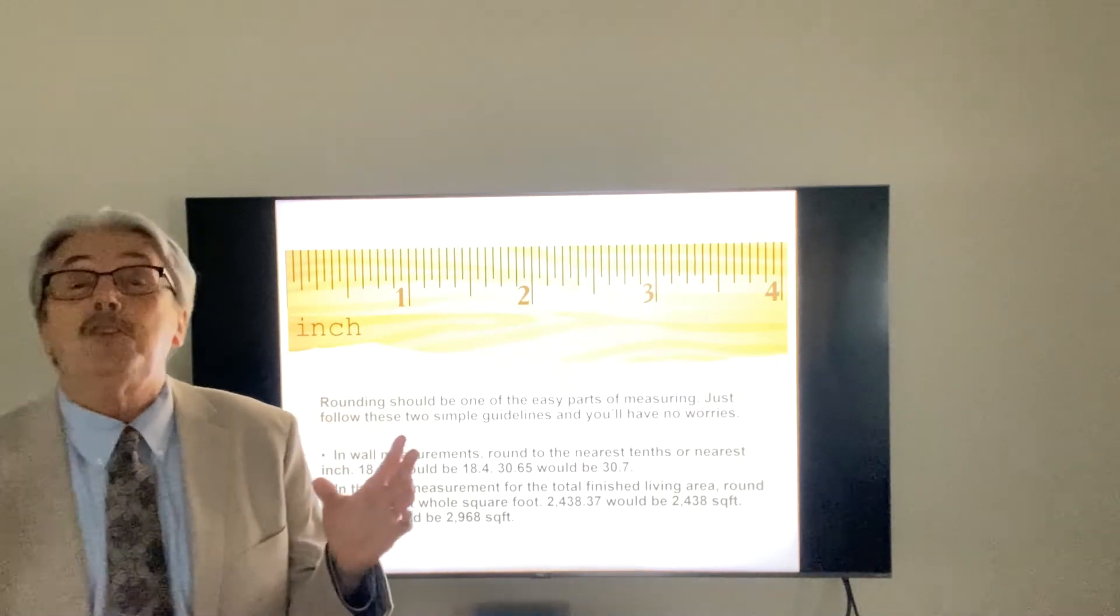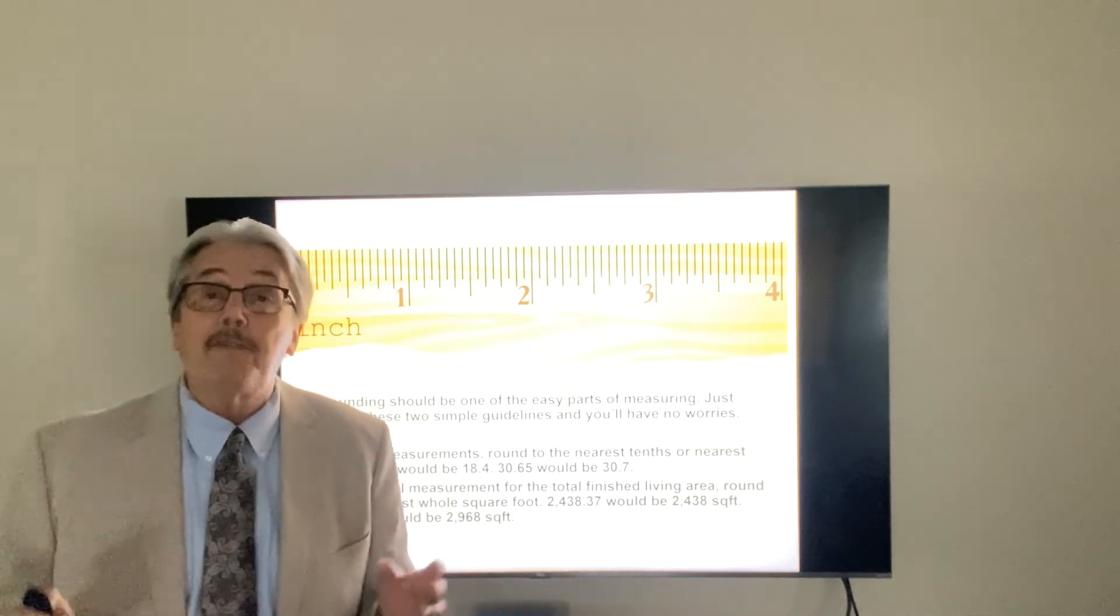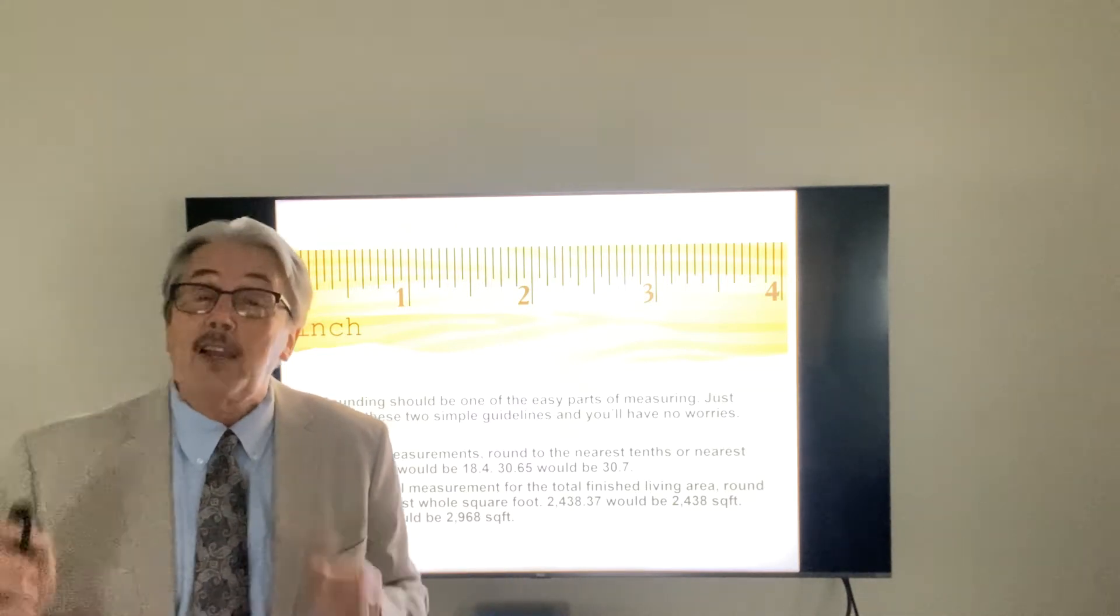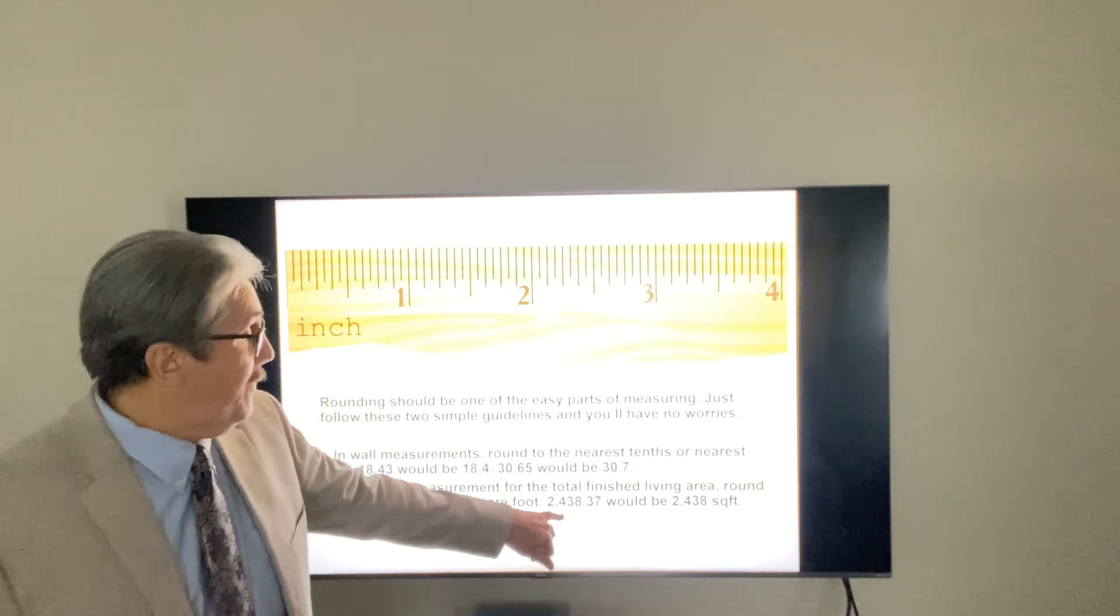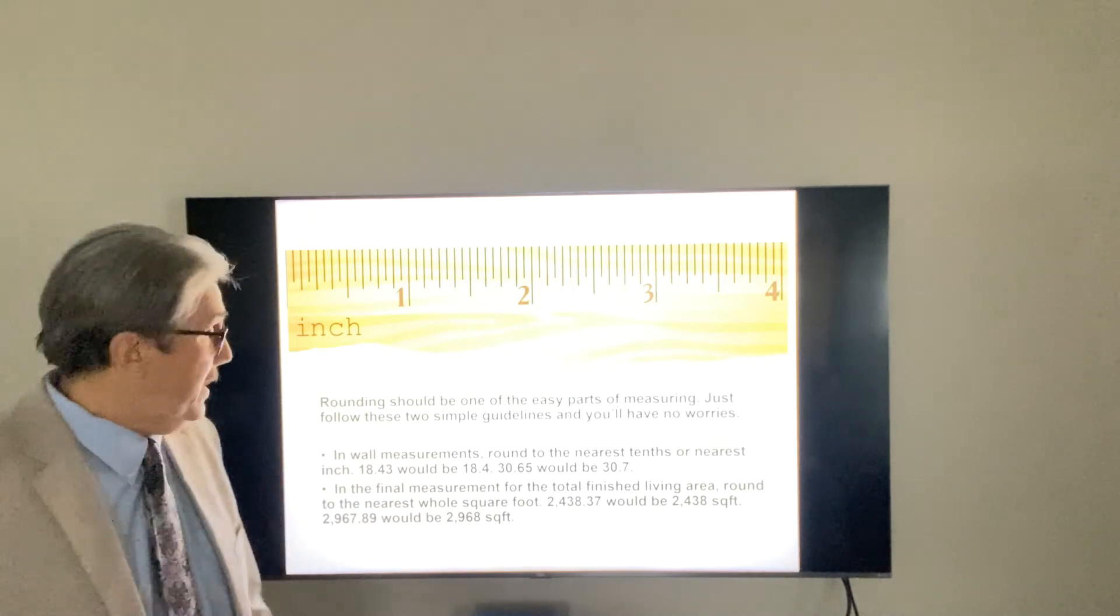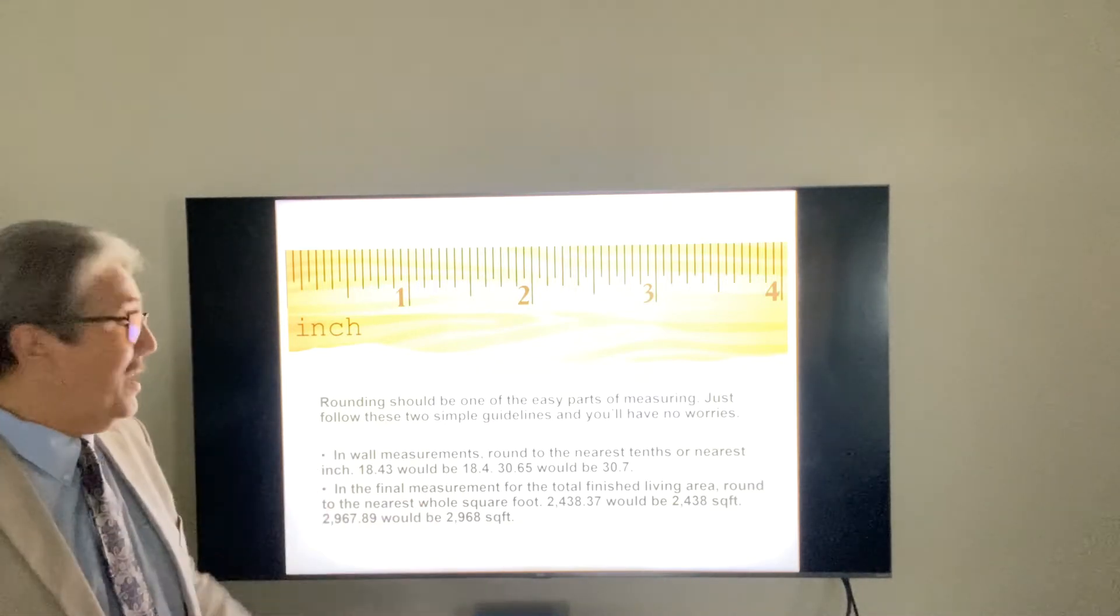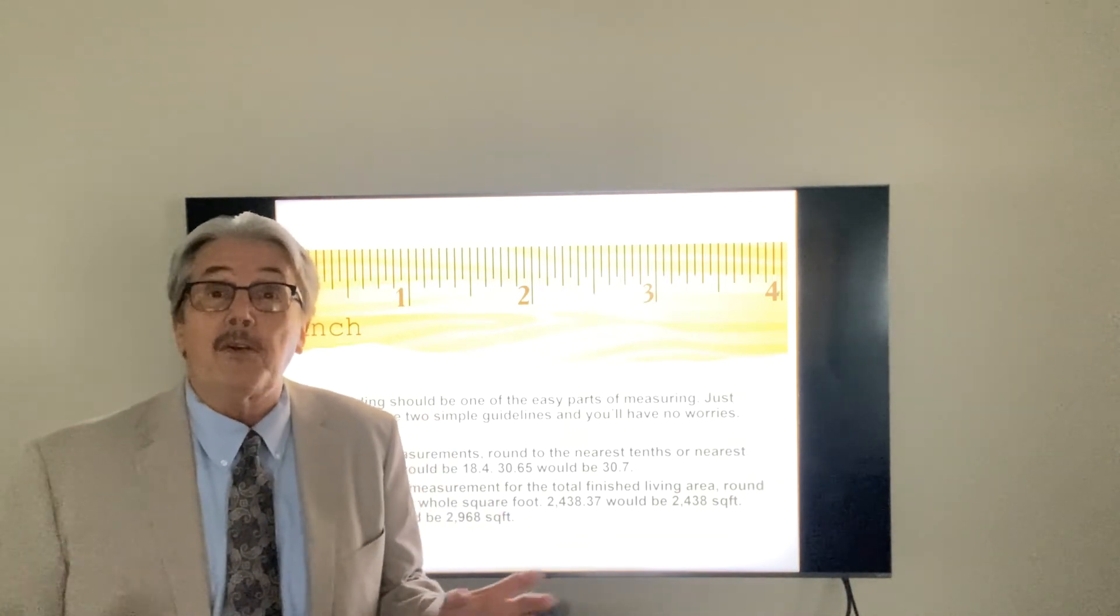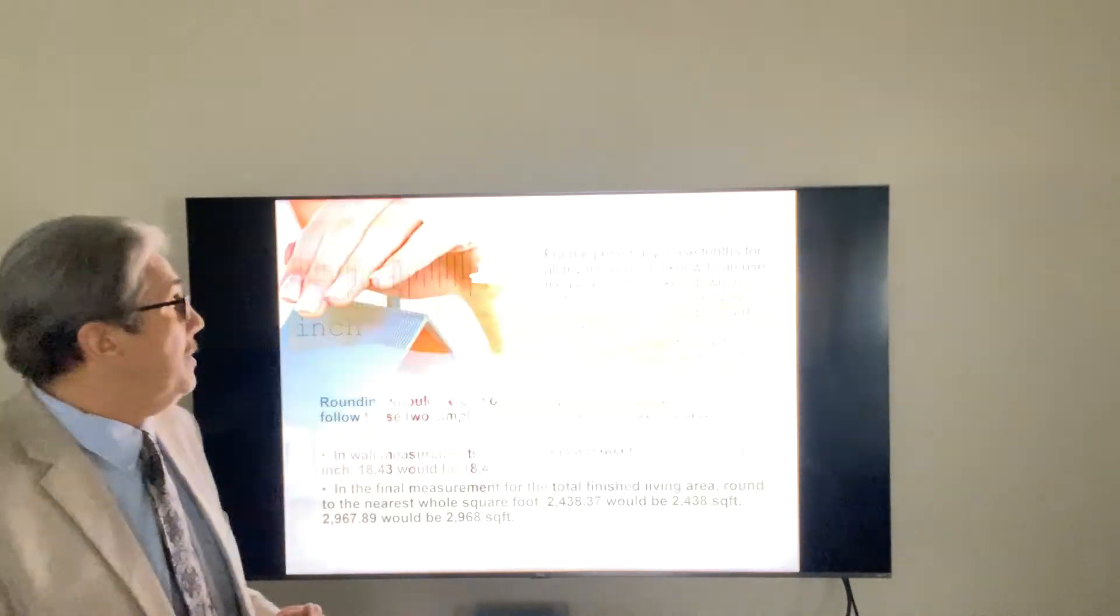And that doesn't mean that you're going to round it to the next half foot or the below half foot. ANSI does not allow you to round it to the nearest half a foot. That avoids any adherence to ANSI. So you've got to round it to the nearest whole square foot. So if you have 2,438.37, that's going to be 2,438 square feet. If you have 2,967.89, you're going to round that one up to 2,968. There's only the measurements around the perimeter, the exterior measurements, and then the square footage total. That's the only two things that you have to worry about in rounding.